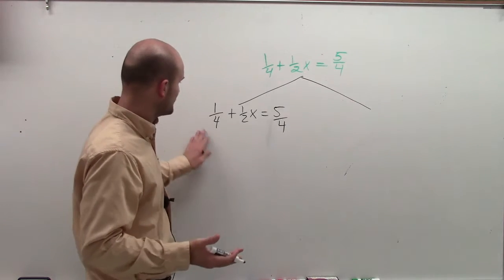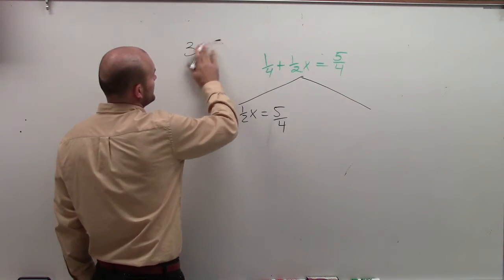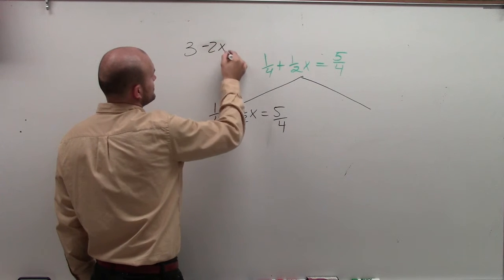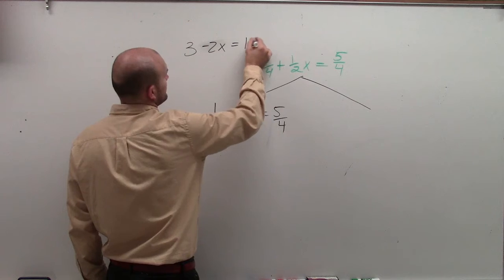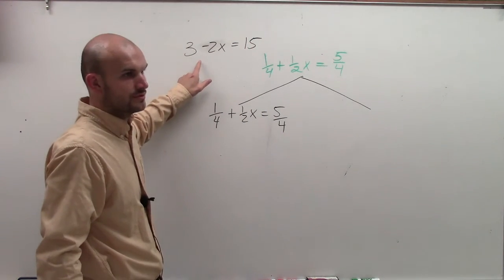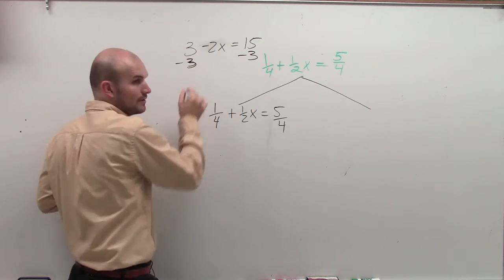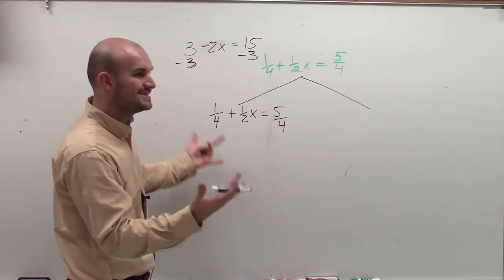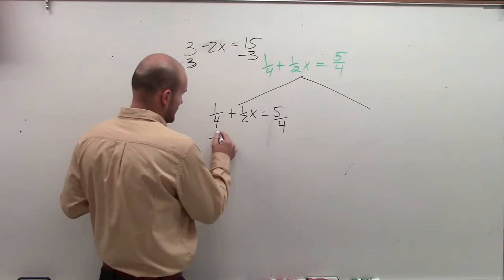Plus 1/2 x equals 5 over 4. Alright, the same thing with the fractions is, let me see if you know what to do here. 3 minus 2x equals 15. OK, do you know what to do first here to solve for this equation? What would you do? Subtract 3 on both sides, right? So it's the exact same thing. What are you going to want to do here? Subtract 1/4. Very good.